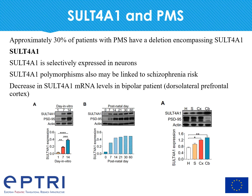However, SHANK3 is not the only gene involved in the pathogenesis of PMS. Approximately 30% of patients with PMS have a deletion that also includes SULT4A1. We therefore wanted to study the role of this gene in neuronal development and function. SULT4A1 is selectively expressed in neurons, polymorphisms in this gene appear to increase the risk of schizophrenia, and decreased levels of SULT4A1 have been found in bipolar patients.